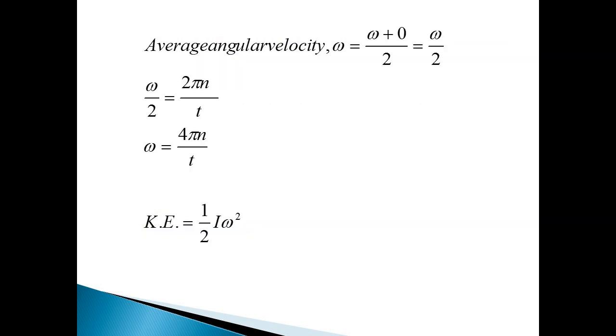So, the average angular velocity omega is equal to the initial angular velocity omega plus zero by two, which is equal to omega by two. We know that the angular velocity is 2π by t. If it makes n rotations, the angular velocity is equal to 2πn by t. So, ω by 2 is equal to 2πn by t. Rearranging, omega is equal to 4πn by t.